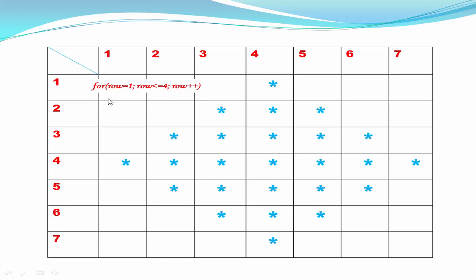From the picture you can see we first print some spaces and then print stars. To print spaces we need another loop: for space equal to one, space less than or equal to maximum number of rows minus current row. Here maximum number of rows is four and current row is row, so we write space less than or equal to four minus row, then increment space by one.